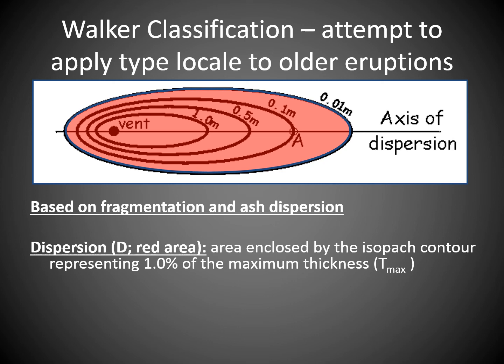You look for the vent, and if the deepest ash layer is, say, 1 meter, you look at the area enclosed by 1/100th of that — in this case, 1 centimeter — and you measure and note that area. That gives you your dispersion value.